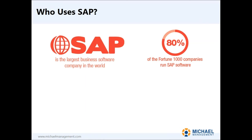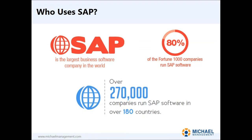The other 13% that don't run SAP software probably run Oracle — that's the number one competitor to SAP. Oracle has a similar software system. But 87% of the market is owned by SAP. About 300,000 companies run SAP software in 180 countries. Google says there are about 195 countries in the world, so SAP software runs in basically all of them.